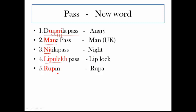So we got five words: Angry, Man, Night, Lip lock, Rupa. Now framing them into a funny sentence: 'An angry man from UK, at night, gave lip lock to Rupa.' Very funny, right! So friends, my tricks will be in this similar way. Please subscribe to my channel and share my videos to your friends. You can see similar videos at the Academy app. Thank you friends for watching.